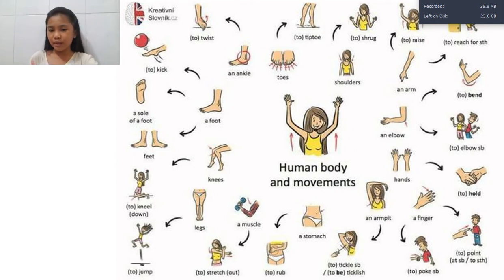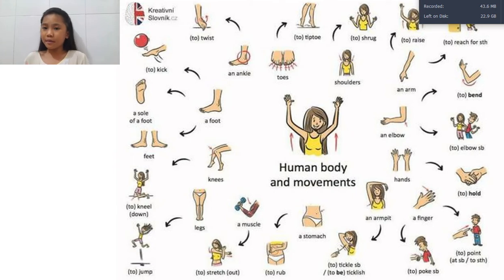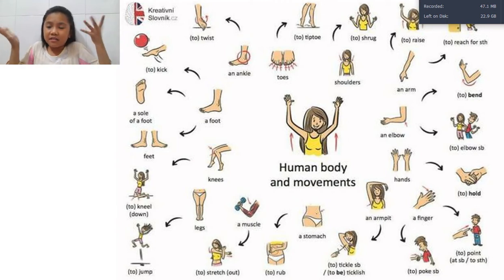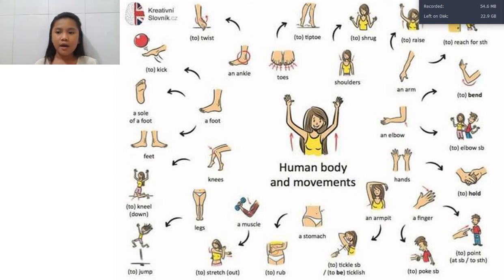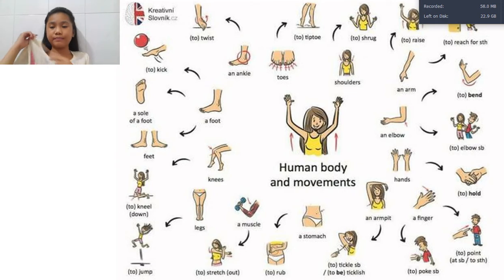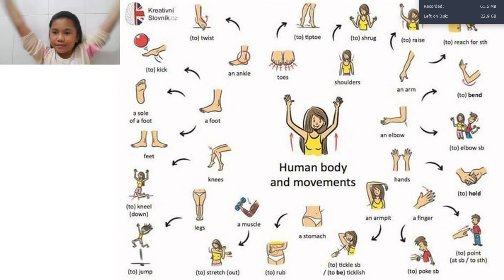What actions could we do with our shoulders? First, we can shrug — like if somebody asks 'where's my book?' and I don't know, I will shrug and say no. It's the movement of moving your shoulders up like this. Next, we use shoulders to raise our hands. When you are raising up your hand like this, the action is being done by our shoulders. So if we put up our hand, you will feel your shoulder moving. If I move my hand to do different exercises, my shoulders also work.